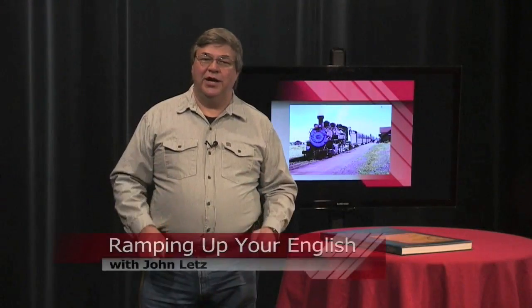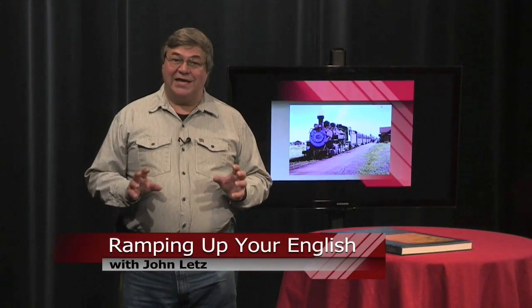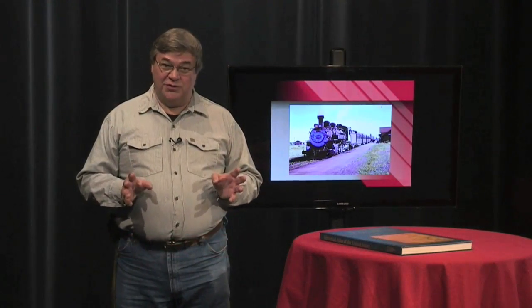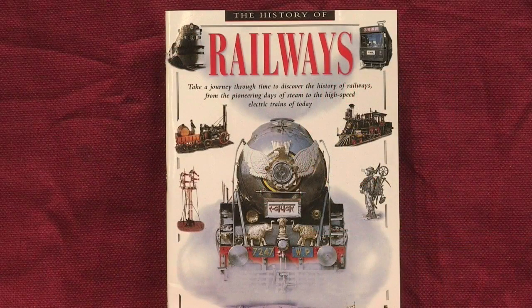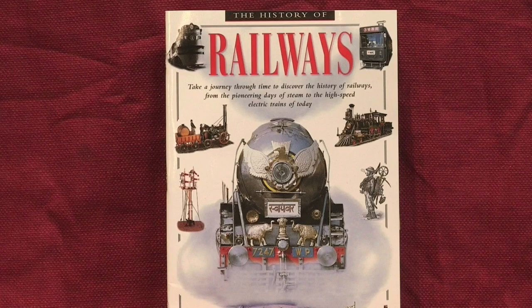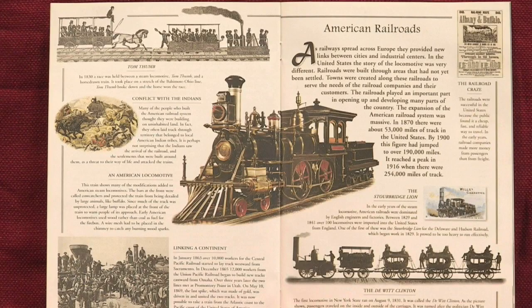This is a Ramping Up Your English book review. If you want to go back in time to the very birth of trains and railroads, you'll want to read The History of Railways by Colin Hindson from Scholastic Books. The book's format reminds me of eyewitness books, with small illustrations and ample text. English learners will find the text very challenging, but the illustrations are clear, providing context to help readers decipher the text. Historical photos depict important events like the Golden Spike Ceremony that joined the Union Pacific and the Central Pacific Railroads as America's first intercontinental railroad.